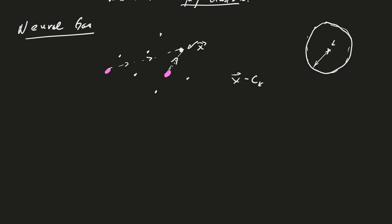And so, again, what we want to do is we're going to take an X, we're going to take the distance to each center, we're going to sort those, sort the distances, and we're going to let the closest center be the winner.